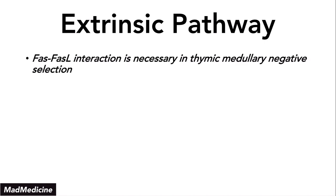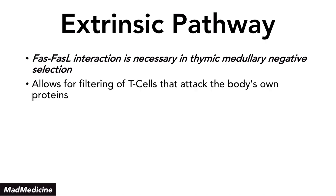The FAS and FAS-ligand receptor binding pathway is very important for thymic medullary negative selection. When T cells are forming in the thymus, we have to make sure they are forming properly through positive and negative selection — ensuring T cells can distinguish self from non-self. T cells that bind the FAS ligand will go through T cell-mediated death and be destroyed, because we don't want T cells that recognize and attack our own body, as that leads to autoimmune conditions.